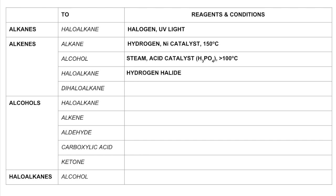To turn an alkene into a dihaloalkane, you would react it with a halogen — chlorine or bromine. If you use bromine, remember that the bromine would be decolorized, and that is the test for an alkene, i.e., a carbon-carbon double bond.